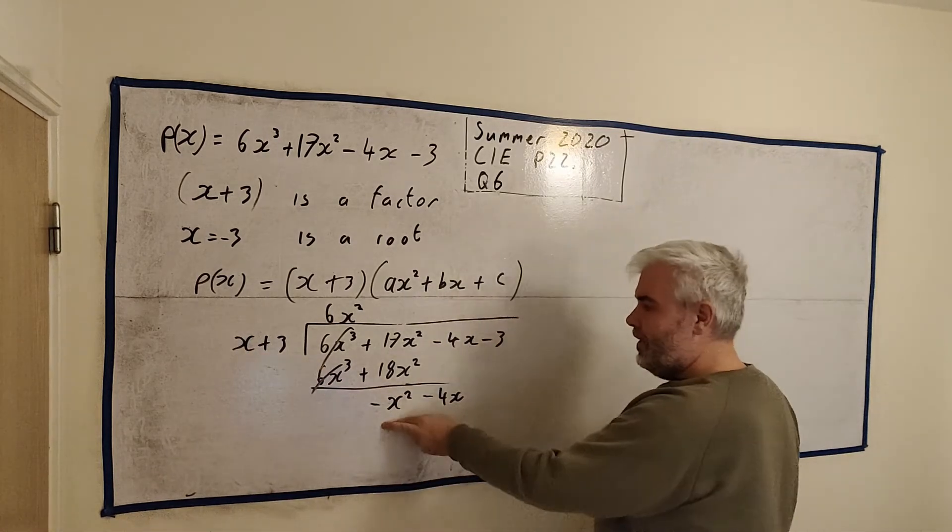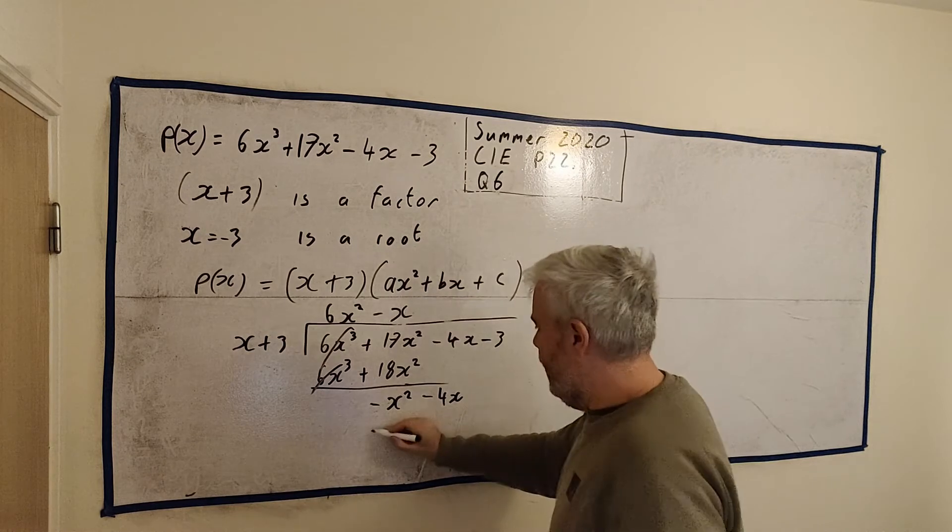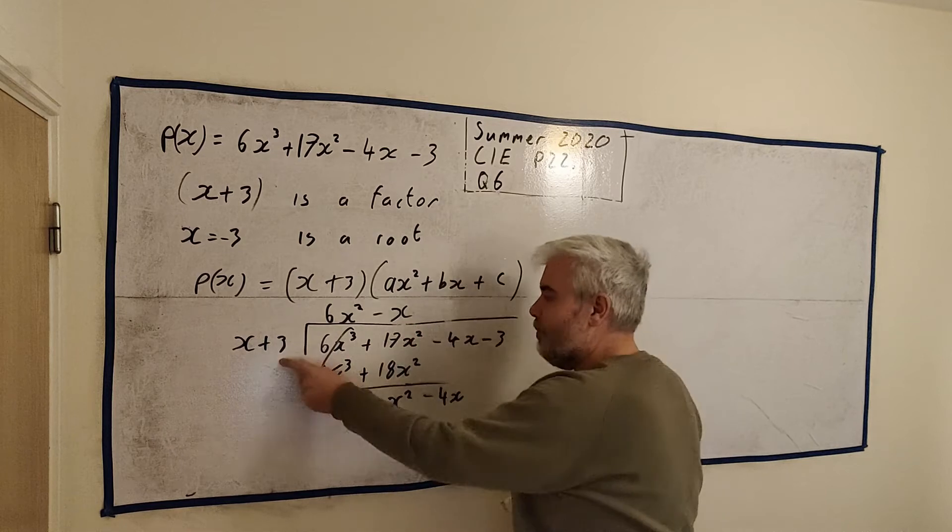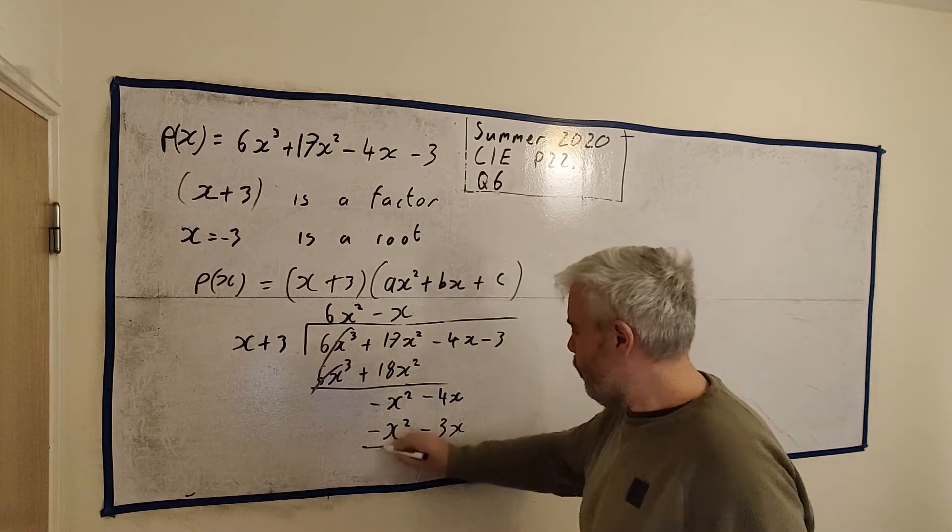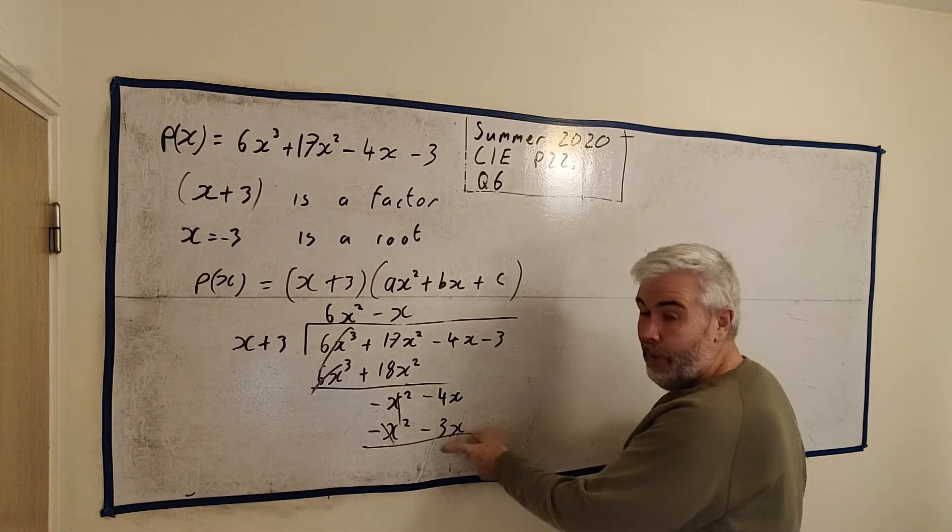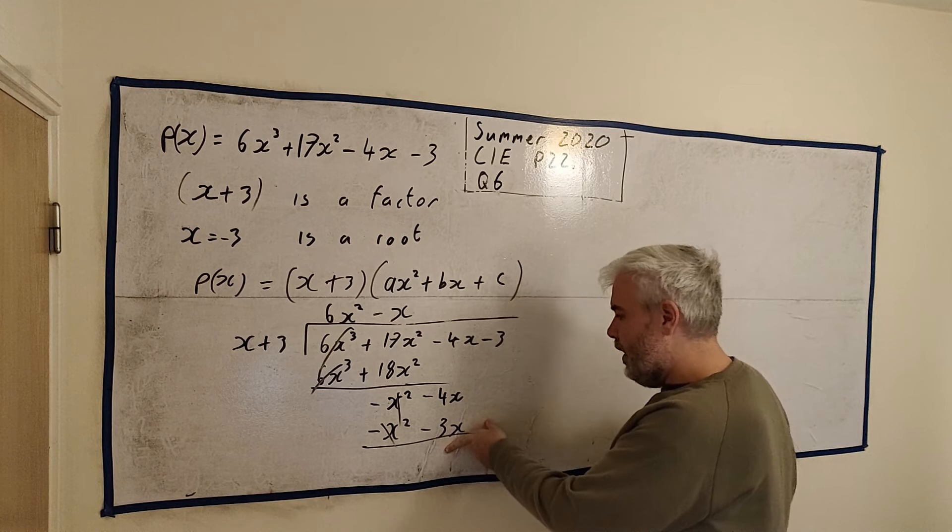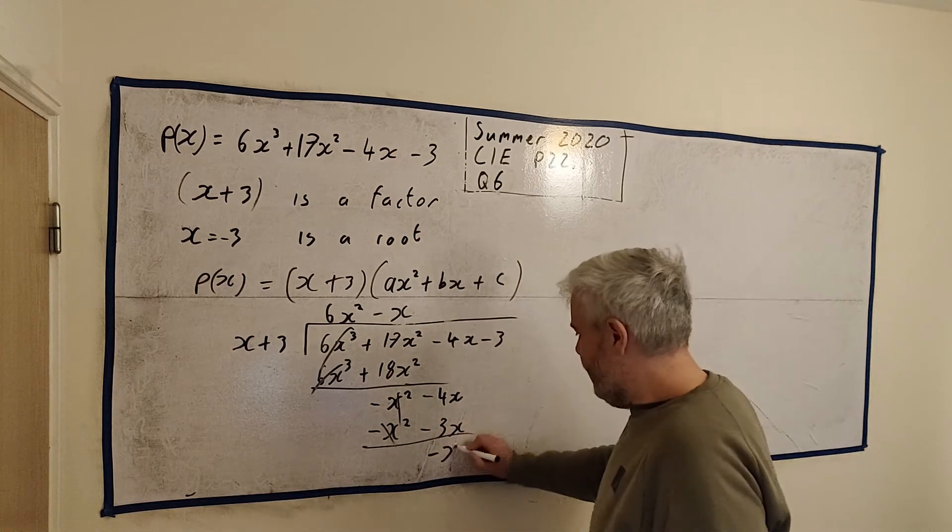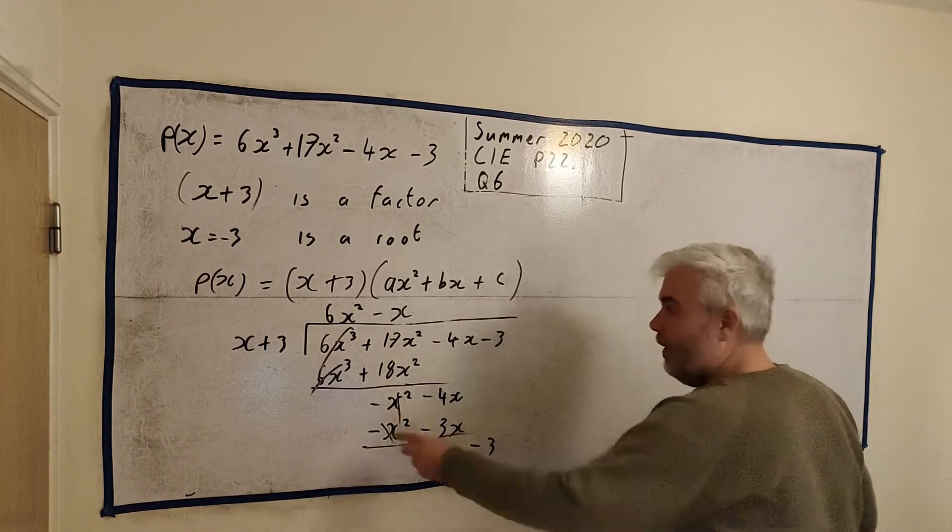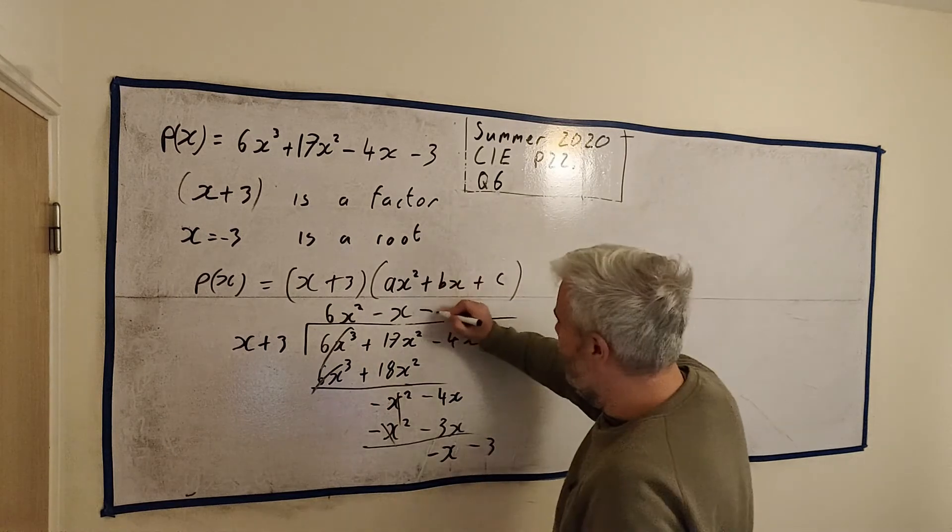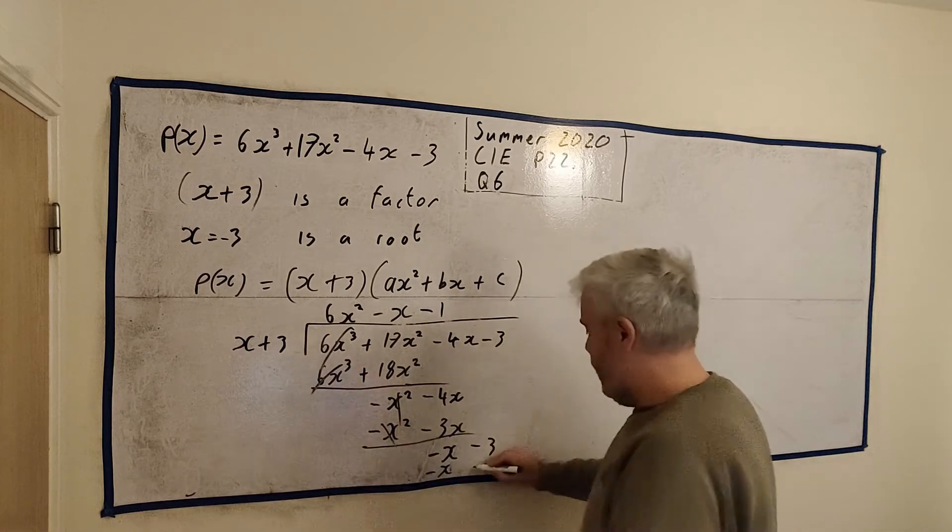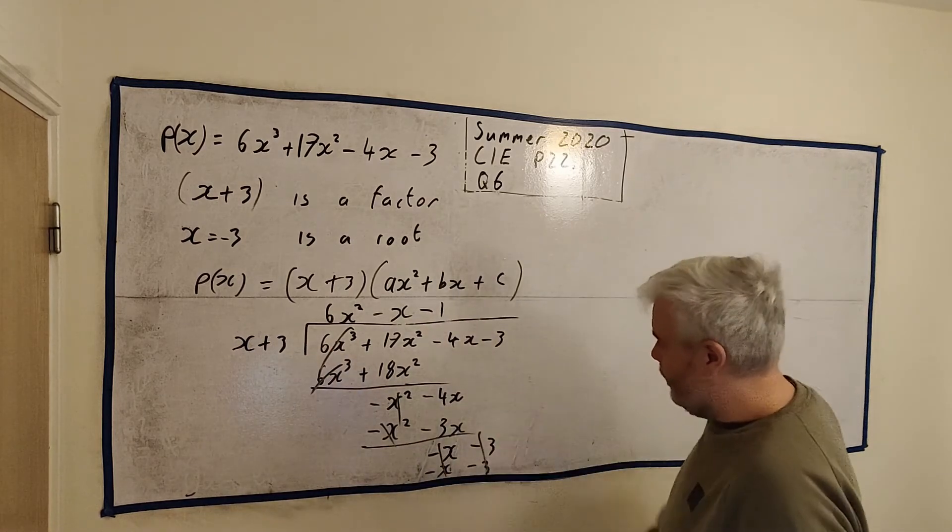So how many times does x go into minus x squared? It's minus x. We double check our work. Minus x by x is minus x squared. Minus x by 3 is minus 3x. We take this away. We get 0 minus 4x minus minus 3. That becomes plus 3. We get minus x here again. We're taking down minus 3. How many times does this go into this? Minus 1. Minus 1 times x is minus x. Minus 1 times 3 is minus 3. And it goes in perfect, which is good. We were expecting it to go in perfect.